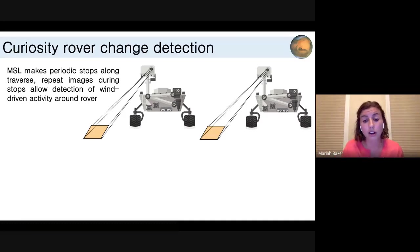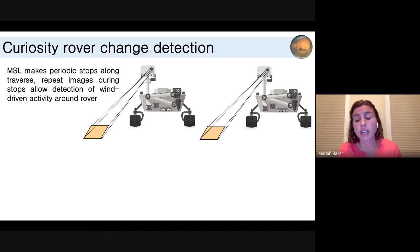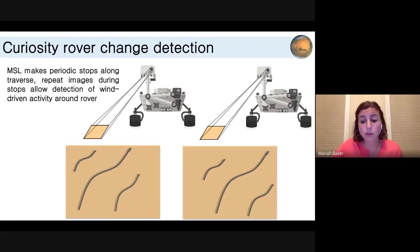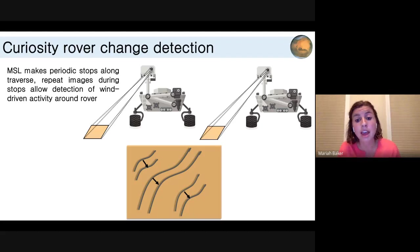Luckily, the Curiosity rover makes very periodic stops for drilling and other science activities and solar conjunction, which gives good opportunities to do change detection imaging. The idea is we can look at ripples on the surface, take two images spaced a couple days apart, and see if these ripples moved. This has been done across the entire mission and allows us to probe the direction and strength of the wind, as well as how winds change with season and time of day.